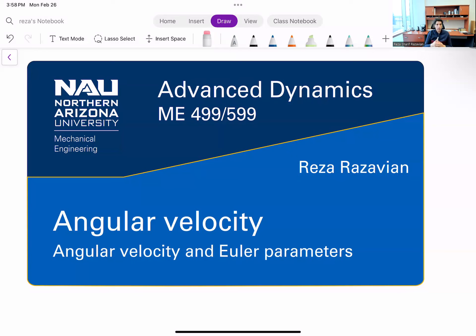We have looked at how we relate angular velocity to the rate of change of Euler angles, to the rate of change of rotation matrix, to the rate of change of axis and angle of rotation. And the last, probably the most useful one, or not the most useful, all of them are useful in their own little ways, is relating them to Euler parameters.